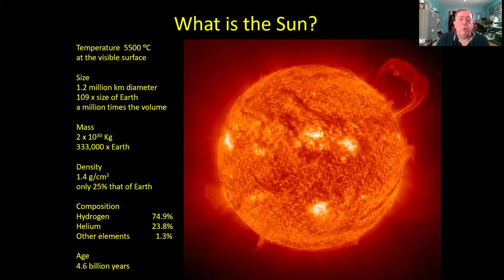The sun is around 4.6 billion years old, a little bit older than the Earth. It probably formed right at the center of the solar system while the Earth was still getting its act together in the cloud of gas and dust that was left over, orbiting around the sun.